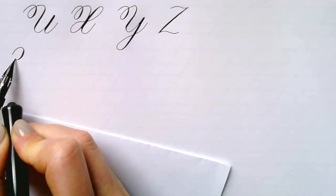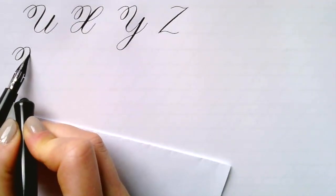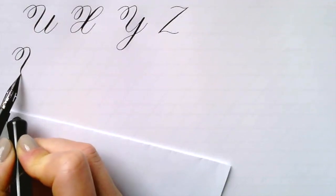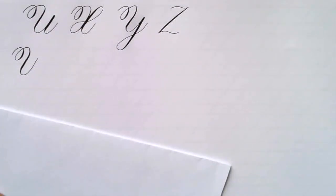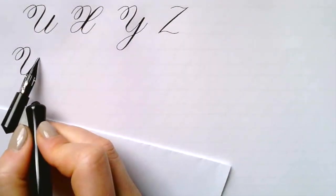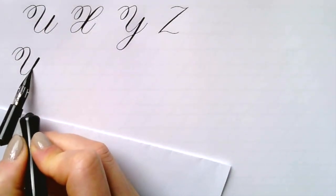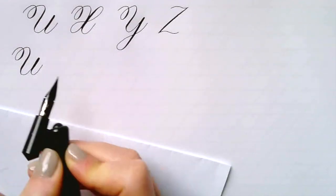This last group has a couple of peculiarities. You already know the U and you already know the entrance loop for the U, but the second leg there does not come up all the way to the ascender line.